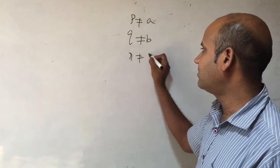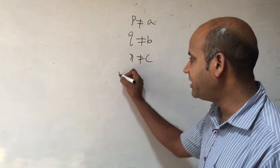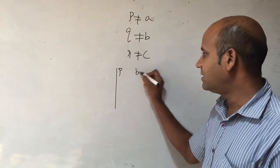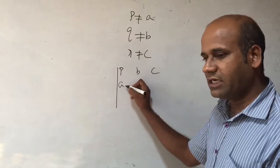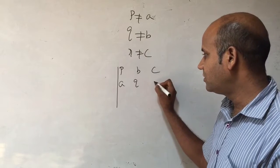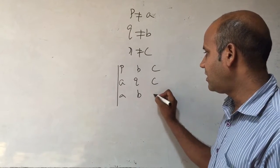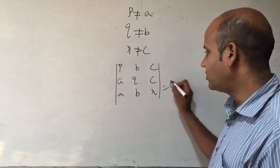And the determinant of the matrix [P, B, C; A, Q, C; A, B, R] is equal to 0.